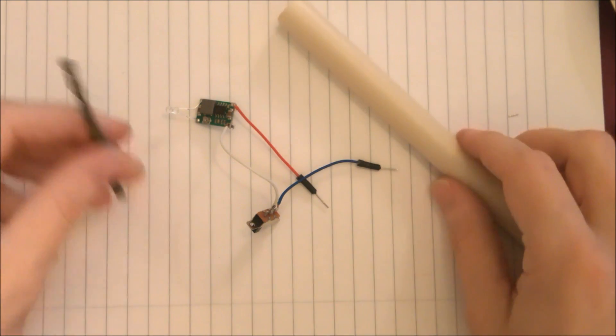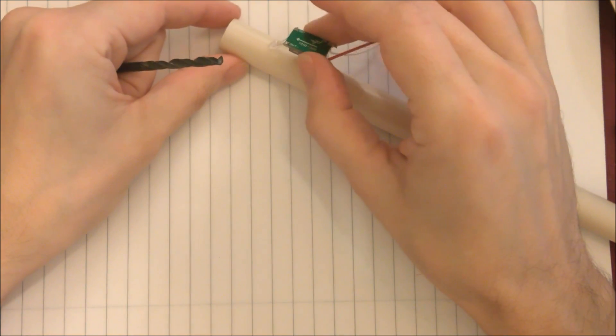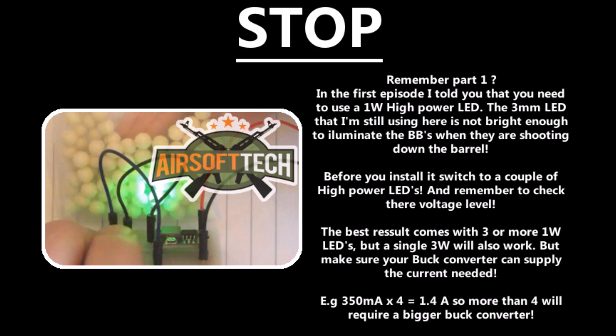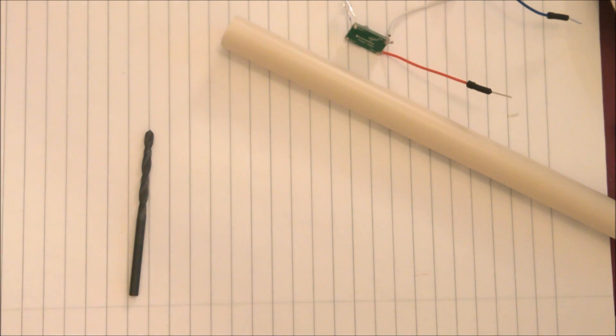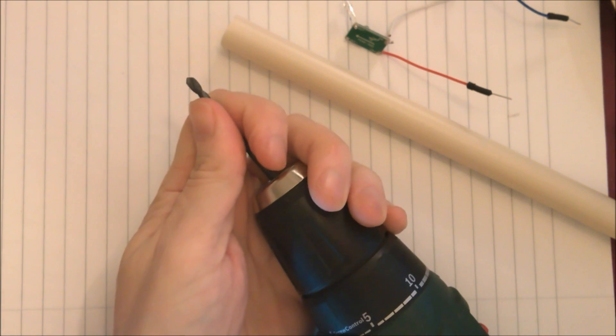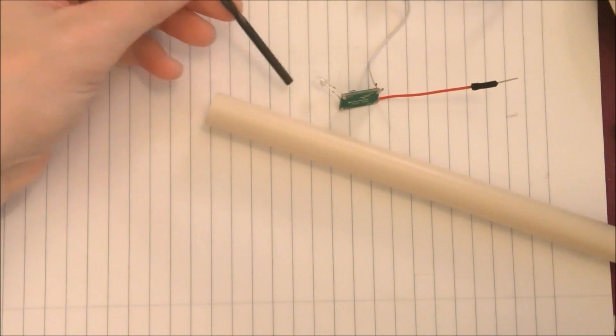Now the first thing to do is to have this LED inserted into the plastic case. So to do this I use a drill, a cordless drill, a small drill that matches the size of the LED.